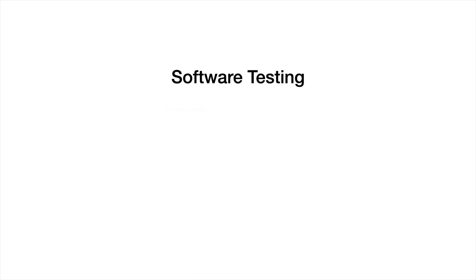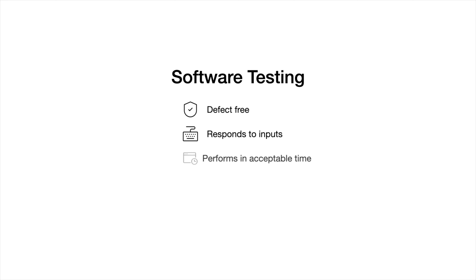Software testing is a method to check whether the actual software matches the expected requirements. It also ensures that it's defect-free, that it responds correctly to all kinds of inputs, that it performs its functions within an acceptable time, that it runs properly on the intended environment, and that it's usable.